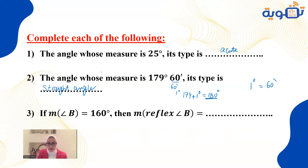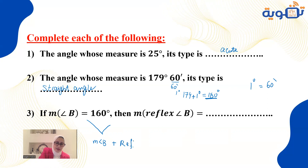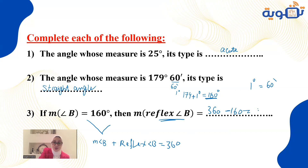Remember: the angle and its reflex must equal 360 degrees. So the measurement of angle B plus the reflex of angle B equals 360. To get the reflex, I calculate 360 minus 160, which gives 200 degrees.